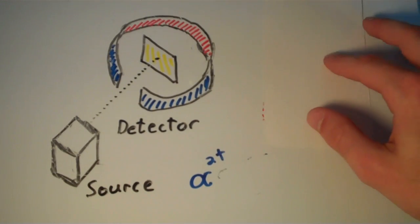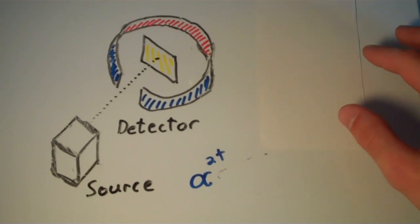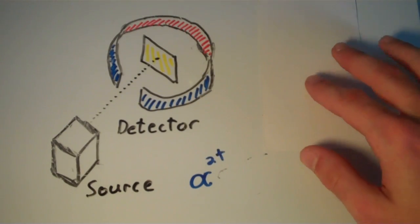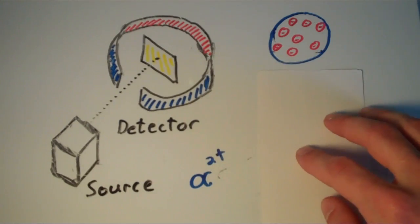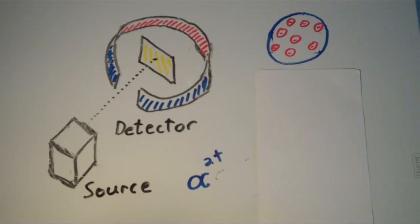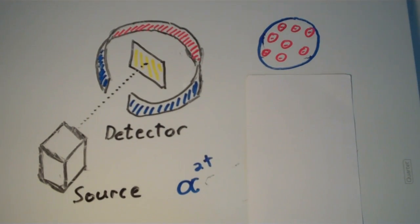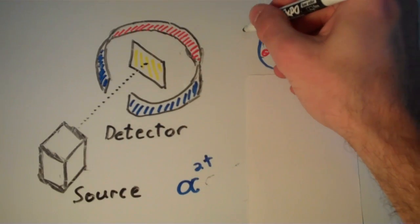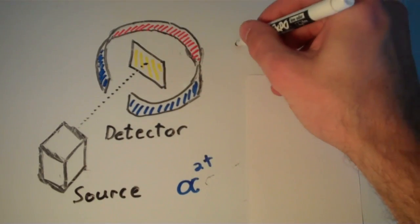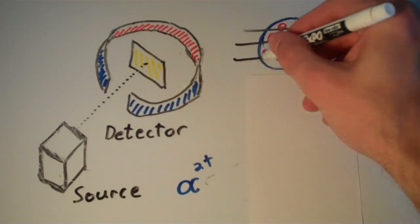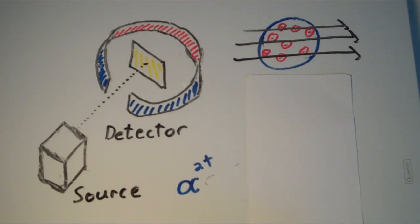So basically in an attempt to confirm the plum pudding model, Rutherford performed this experiment. And he hypothesized that if the plum pudding model was indeed the correct model of an atom, then these alpha particles should pass straight through the atom or straight through the foil with minimum deflection.